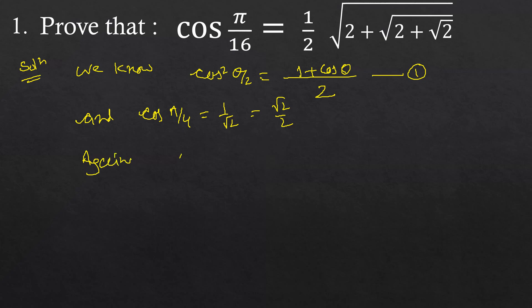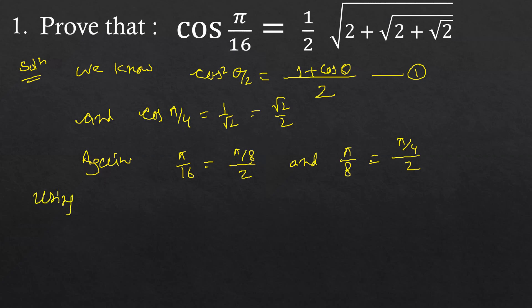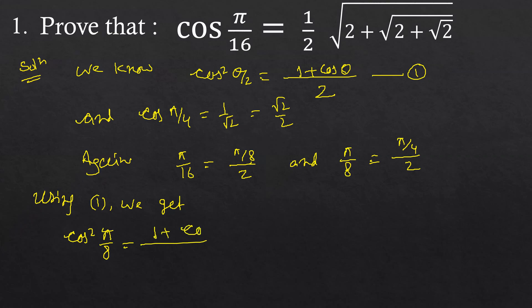We note that π/16 is equal to (π/8) over 2, and π/8 is equal to (π/4) over 2. Now using identity 1, we get cos²(π/8) is equal to (1 plus cos(π/4)) by 2.